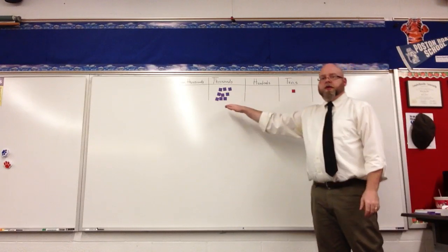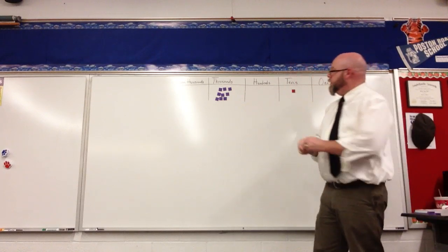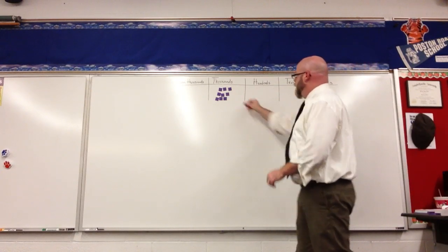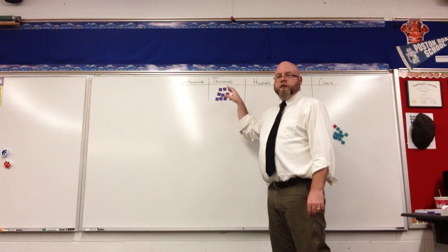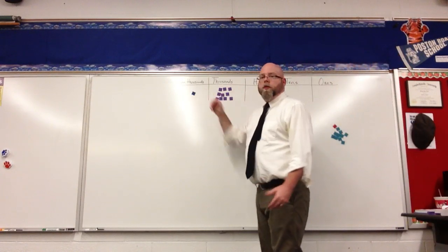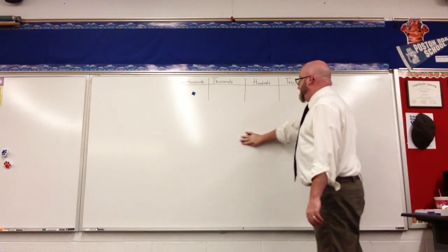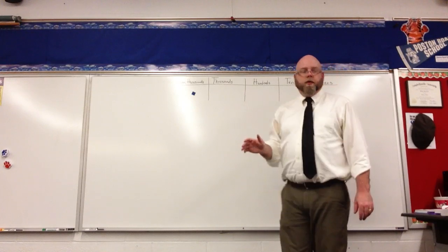Well, the same happens with thousands. Nine thousands. So what would come next would be ten thousands. Well, ten thousands is equal to one ten thousand. So as we're counting, the pattern is very similar that way.